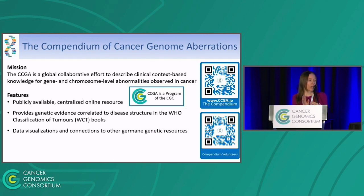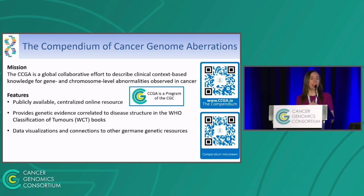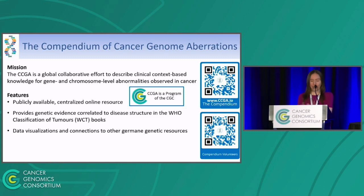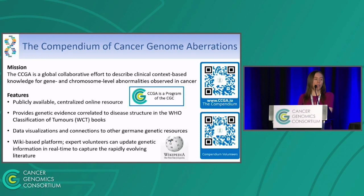It also has some data visualizations, and importantly, the idea is to have genetic evidence present related to the diseases that we find in the WHO classification tumor books — the blue books, as you heard mentioned. And it's also a wiki-based site, so that means you can update in real time to try to keep up with the rapidity of the literature being produced.